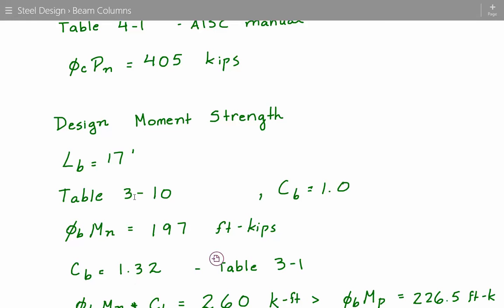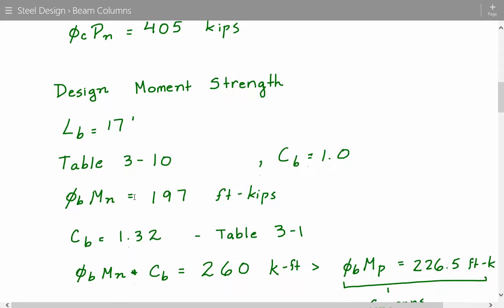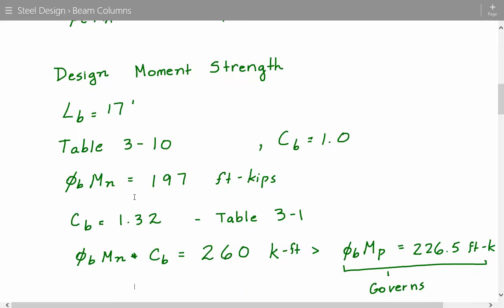Table 3-1 has values for C sub B for simply supported beams. Since we have a load at the midpoint, and there's no lateral bracing along the span, C sub B is going to be 1.32. So we take the moment strength, and we multiply it by this C sub B. So this gives us 197 times 1.32, and that's 260 kip feet.